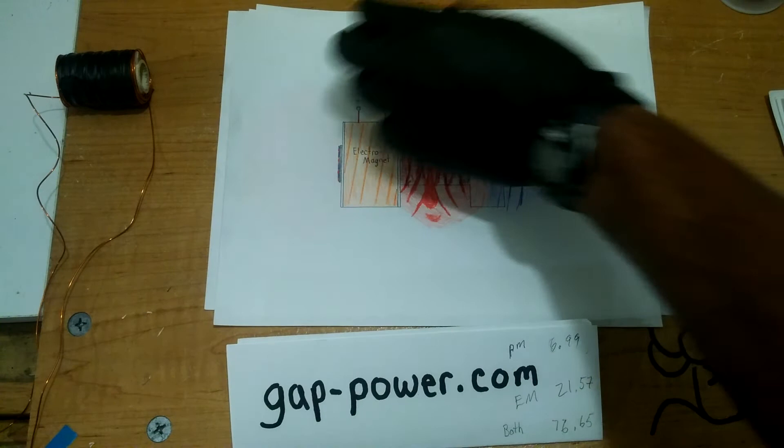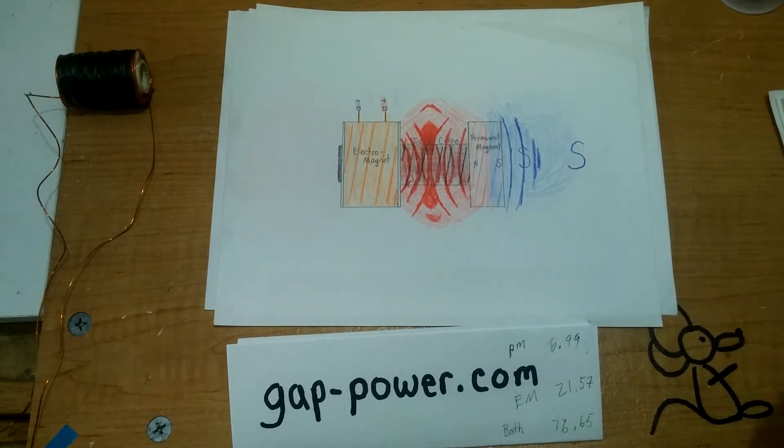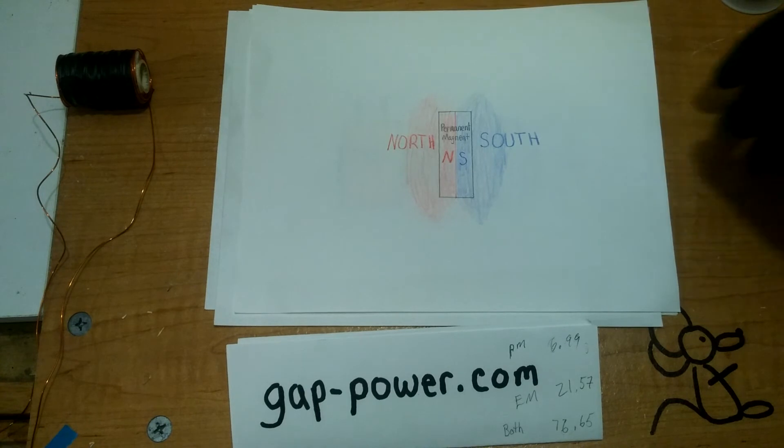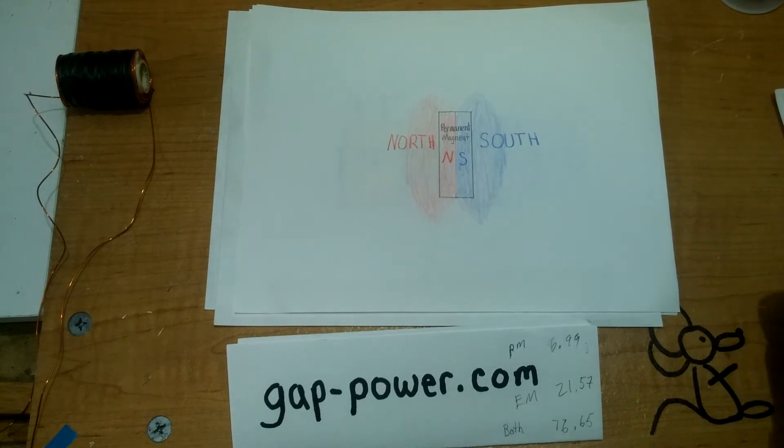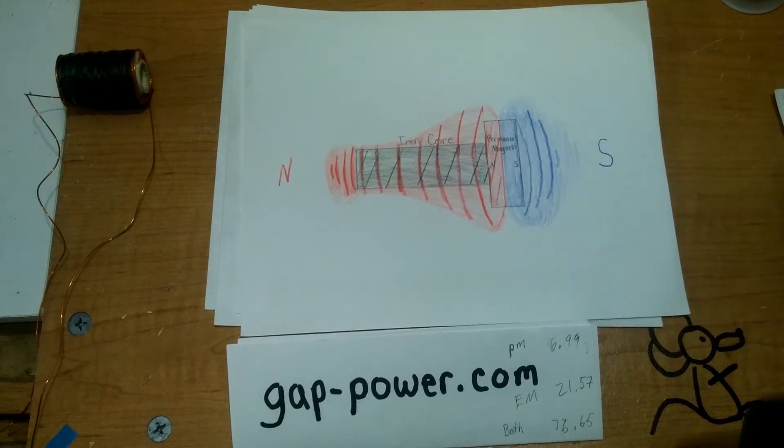To give you a timeline of what magnetism looks like, we first started with a permanent magnet, then a permanent magnet on a ferromagnetic core.